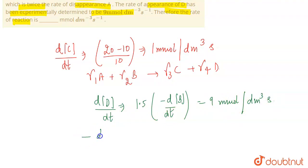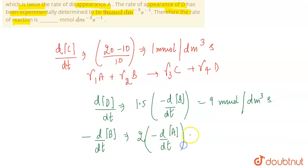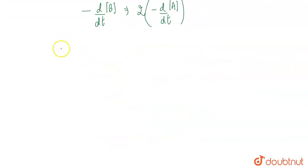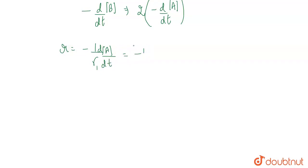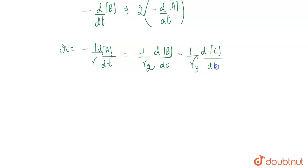Now, if you can see, the reaction gives us minus d/dt of concentration of B, which relates to minus d/dt of concentration of A. This will be equal to minus (1/γ2) dB/dt.